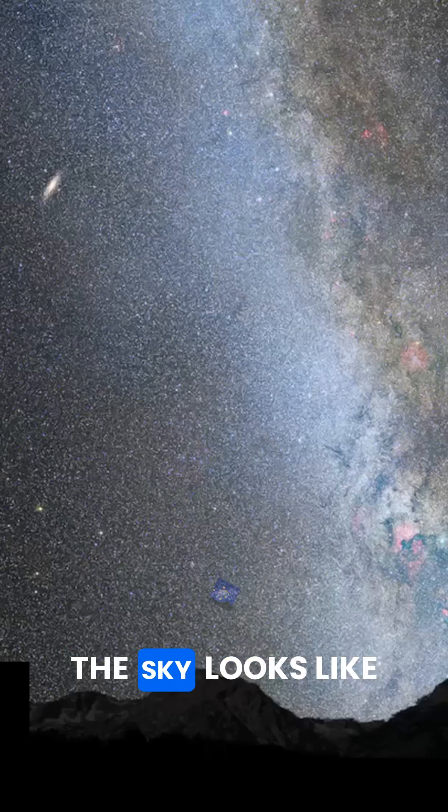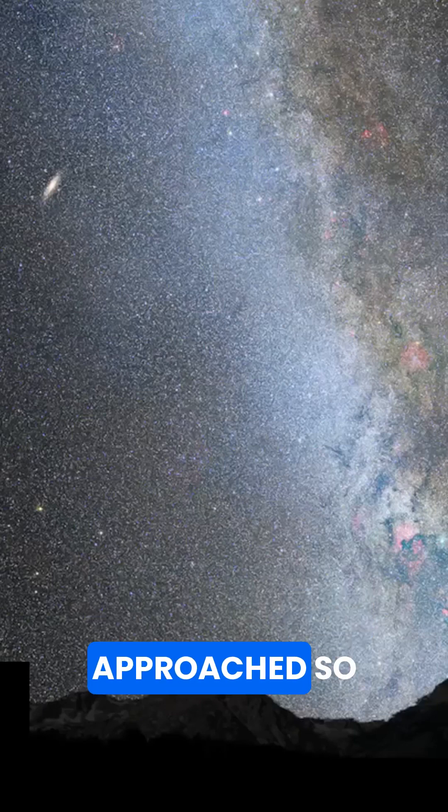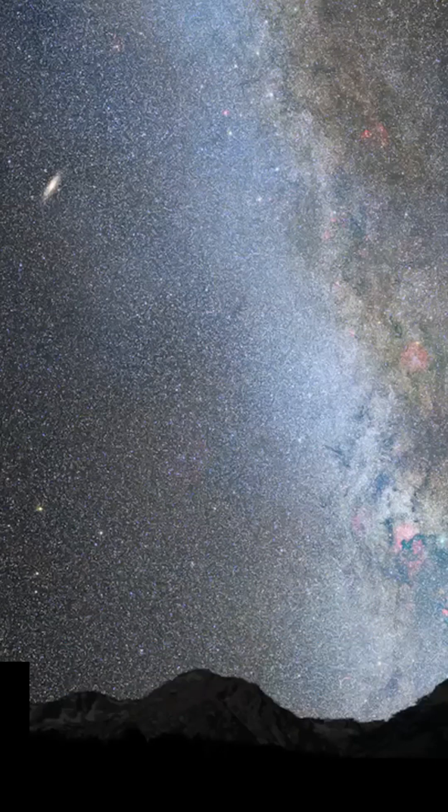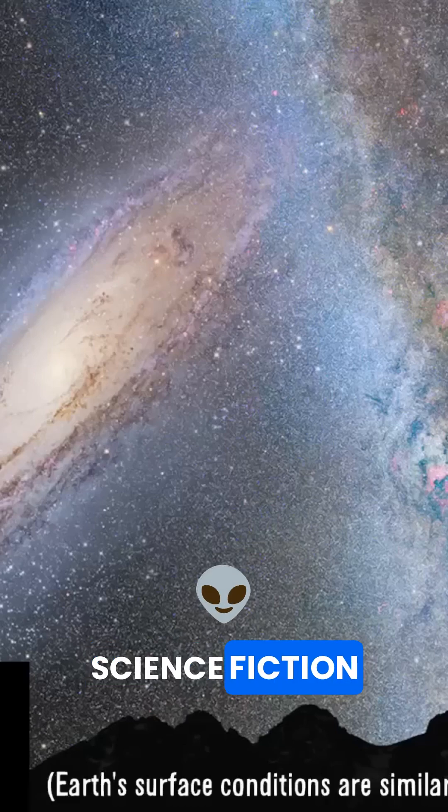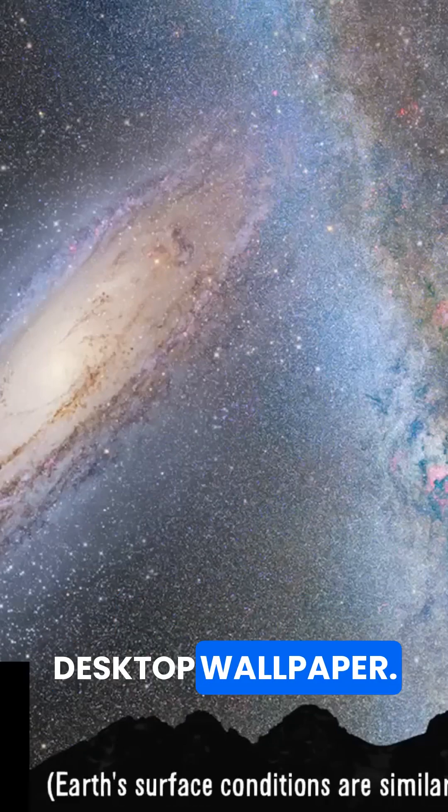Right now, the sky looks like this. In two billion years, Andromeda will have approached so closely that people will look up at the sky and see this. In 3.75 billion years, the night sky will be like a scene from a science fiction movie or an awesome desktop wallpaper.